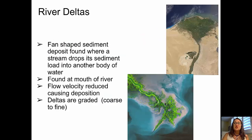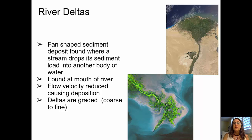Stream deposits also include deltas. Deltas form as fan-shaped sediment deposits at the mouth of a stream where it deposits its sediment load into another body of water. This could be a tributary flowing into a larger stream, or a large river like the Mississippi or the Nile, shown here, forming a large delta where it flows into a major body of water. The deposit occurs because of reduced flow velocity, and deltas are graded — coarser materials near the shoreline, finer materials further out into the open water.